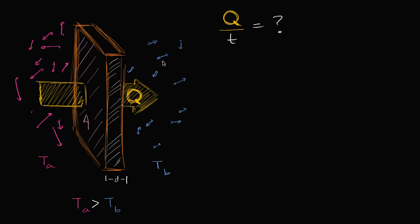We're assuming that these two compartments are completely separated. Now, we're going to assume that the temperature on the left is higher than the temperature on the right. Because of that, you're going to have a transfer of thermal energy from the left to the right. That thermal energy that gets transferred, we call that heat, and we'll denote that with the letter Q. I'm curious about how much heat is transferred per unit time — that's the rate at which heat is transferred.